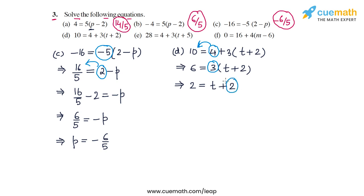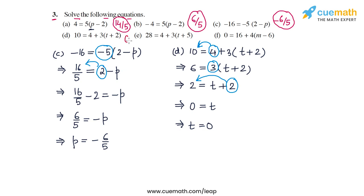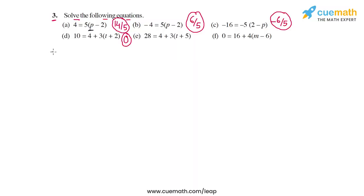In the last step, we transpose the plus 2 to the left side so it becomes minus 2. On the left side we have 2 - 2 = 0, and on the right side we have t. So t = 0 is the solution of the equation in part d.